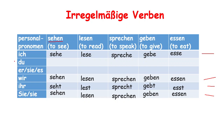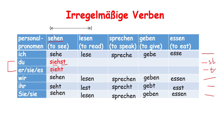But there is a difference in conjugation for du and er/sie/es in irregular verbs. For the first group, we change the first 'e' to 'ie'. For example, sehen becomes siehst for du — first 'e' changes to 'ie', and then we add -st. For er/sie/es, 'e' changes to 'ie' and we add -t.